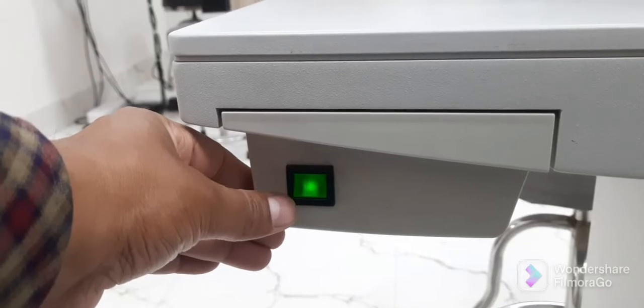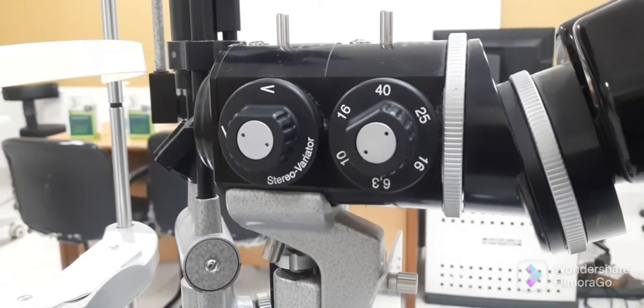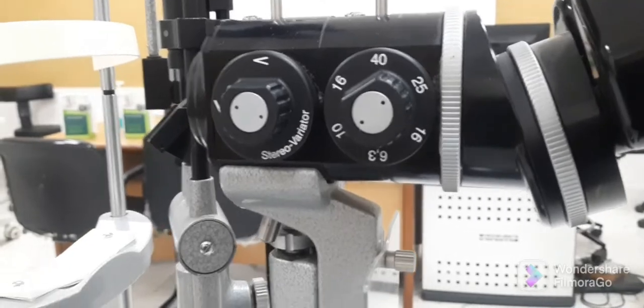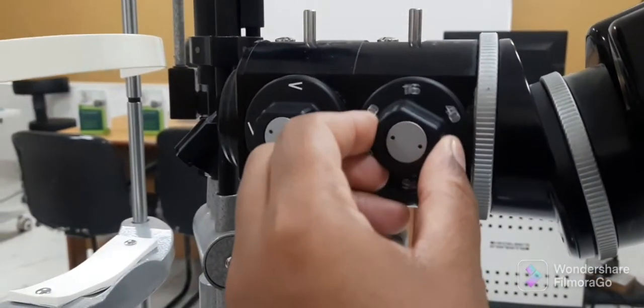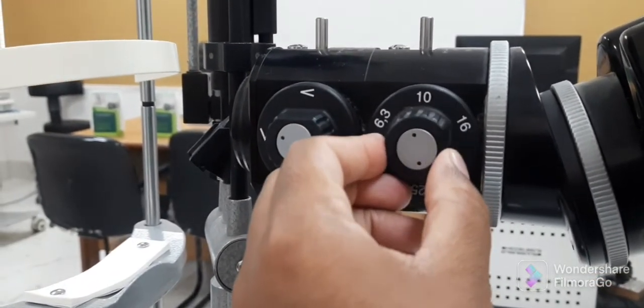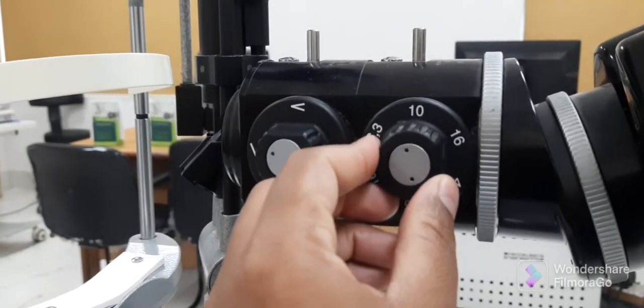Adjust the magnification by rotating the magnification dial on the slit lamp to 10x, or you can use 16x also. The magnification should not be too low or too high.